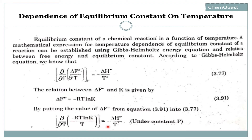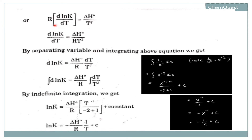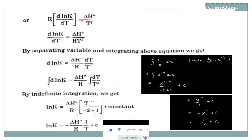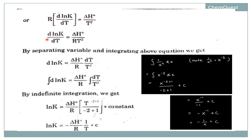This equals minus ΔH°/T². So we have this equation: d(ln K)/dT equals ΔH°/(RT²). There was a minus sign on both sides which cancelled out. Now we rearrange so that R comes to the right side, giving d(ln K)/dT equals ΔH°/(RT²).